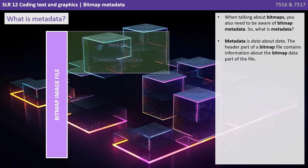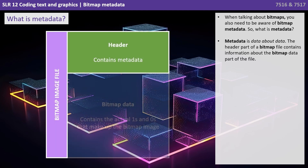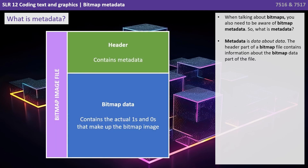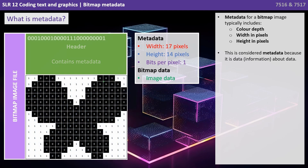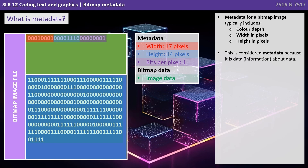Every bitmap comes with what we call a header part, and this contains information about the actual data part of the bitmap file. Metadata for a bitmap could typically include things like the colour depth of the image, its width in pixels and its height in pixels.